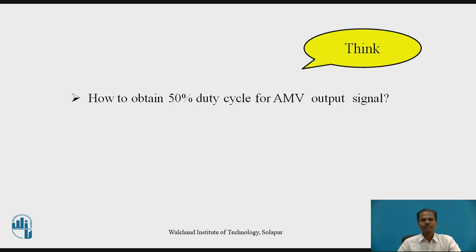Students should pause the video here and think over this question: How to obtain 50% duty cycle for a stable multivibrator output signal? For a normal stable multivibrator using IC555, the output signal is a rectangular wave. The duty cycle is the ratio of the time duration for which the output signal remains high to the total time period. The duty cycle is more than 50%, meaning the output remains high longer than it remains low.